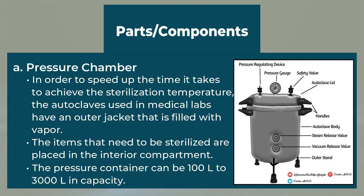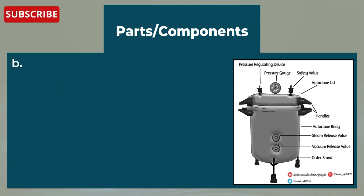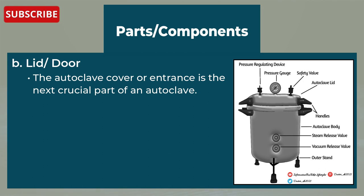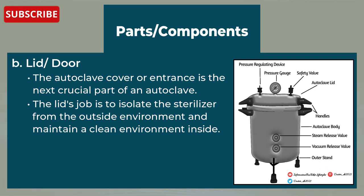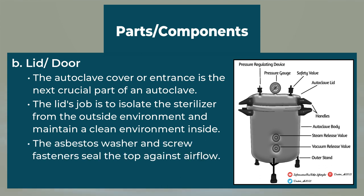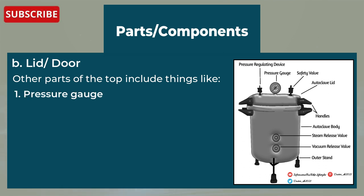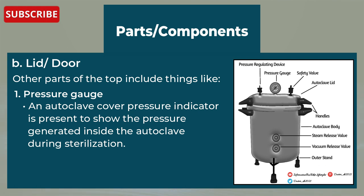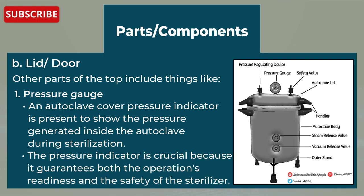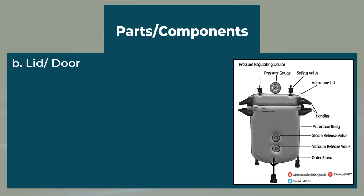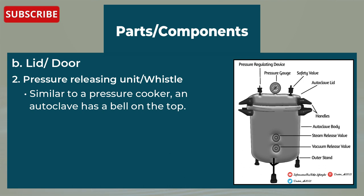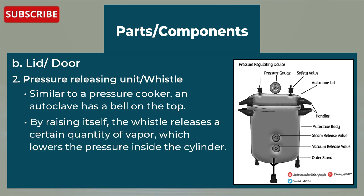The pressure container can be 100 liters to 3000 liters in capacity. Then comes the lid or door. The autoclave cover is the next crucial part — its job is to isolate the sterilizer from the outside environment and maintain a clean environment inside. The asbestos washer and screw fasteners seal the top against airflow. Other parts of the top include: a pressure gauge, which is present to show the pressure generated inside the autoclave during sterilization, and is crucial for operational readiness and safety. Also, a pressure releasing unit or whistle — similar to a pressure cooker, an autoclave has a whistle on top that releases a certain quantity of vapor, lowering the pressure inside the cylinder.